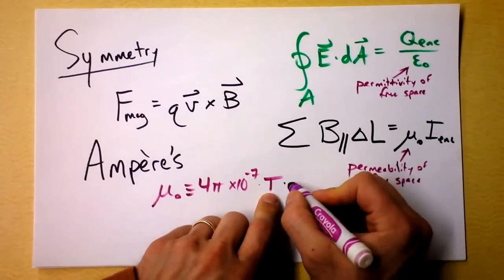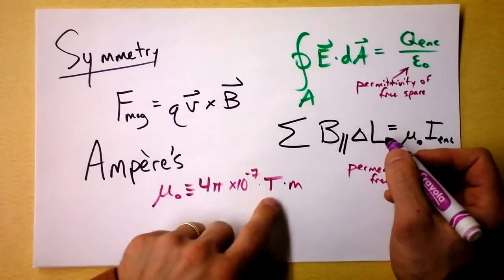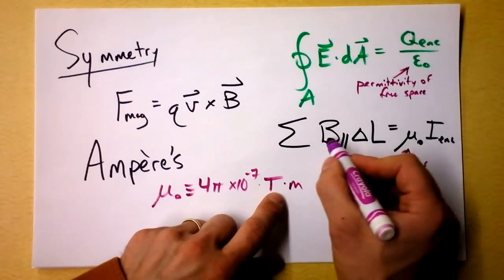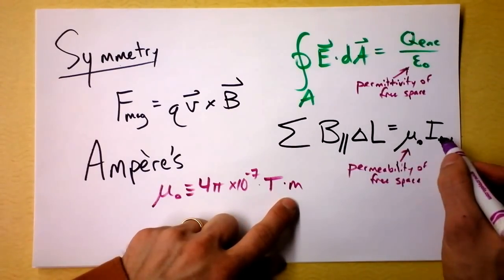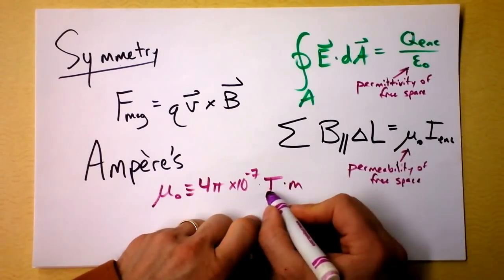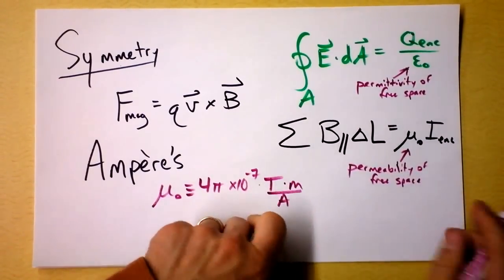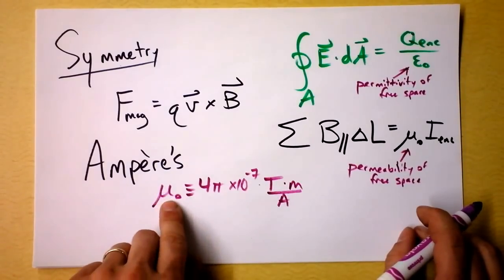I guess it's got to have units that make it into magnetic field times area. We're going to have current, so we've got to get rid of the current units. So I'm going to have, oh, no, not times area, times length right there, Tesla meters, magnetic field, times meters. And then we're going to divide by the units of the current. So it's Tesla meters per amp. And that gives us mu naught.